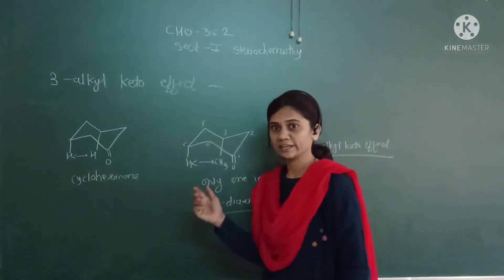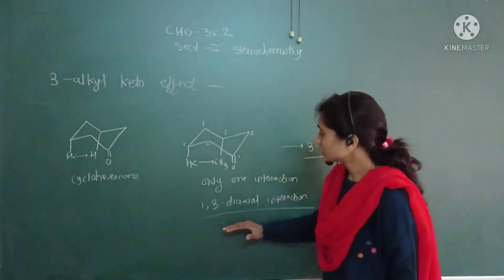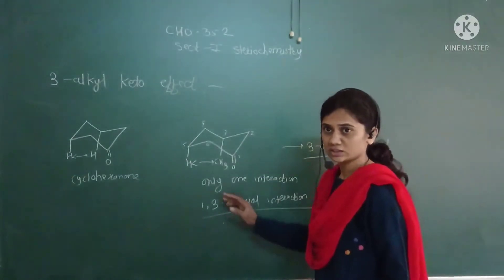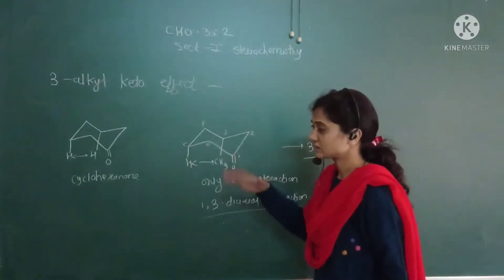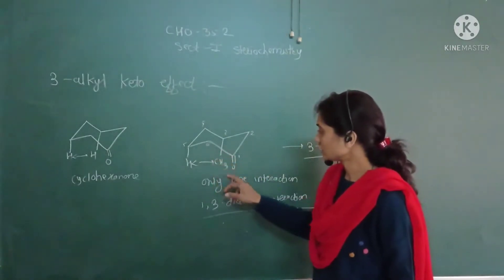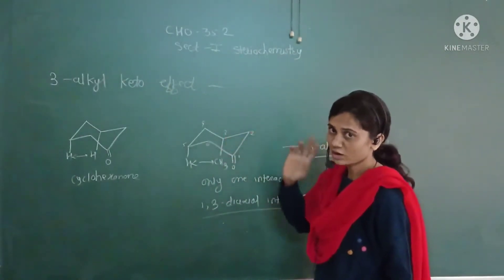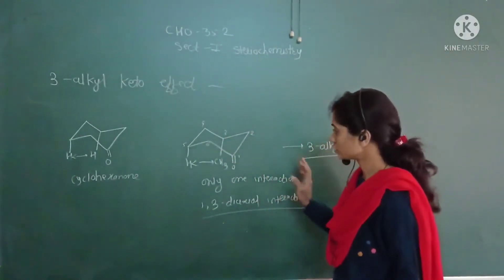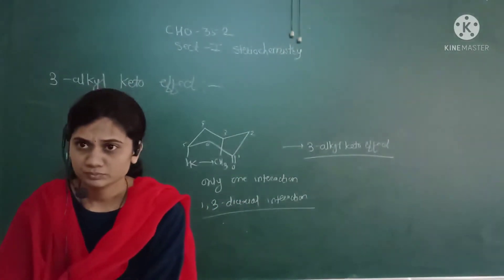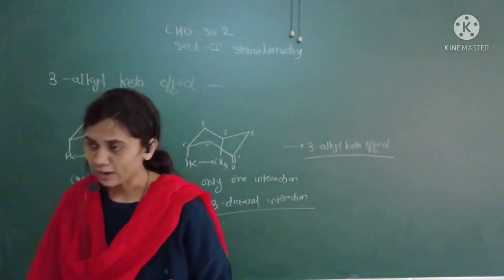As we know from the last lecture, because of axial and equatorial positions, there is a change in energy. Some axial conformers have different energy and some equatorial conformers have different energy. If CH3 is in the equatorial position, it shows different energies.